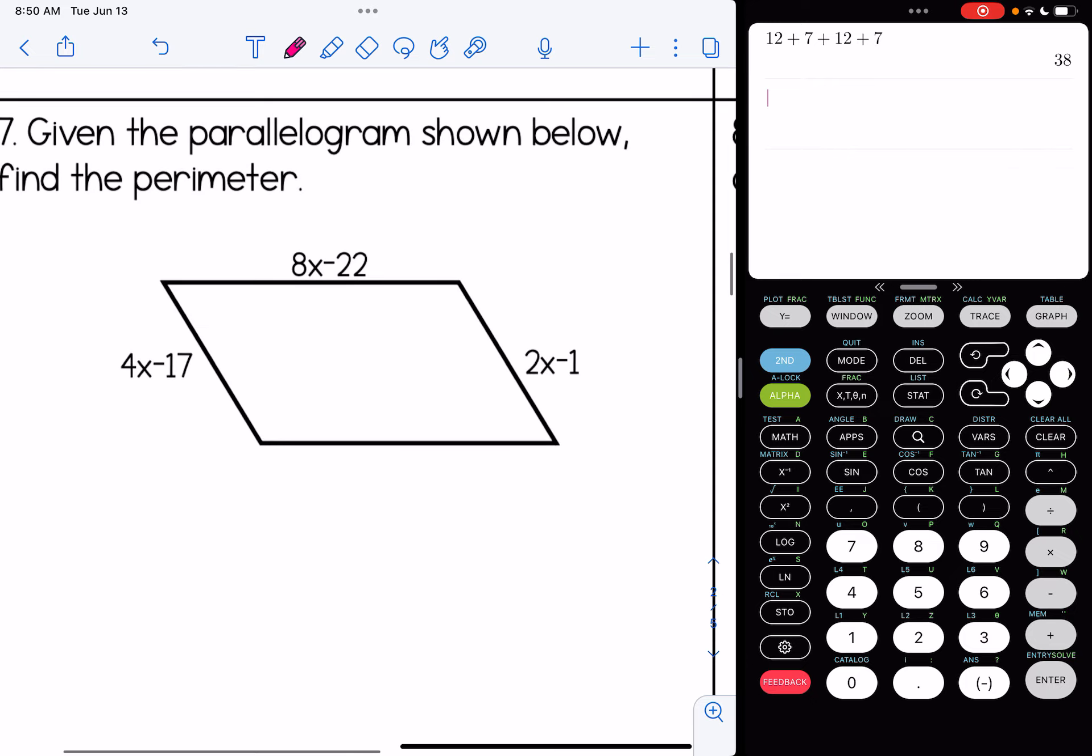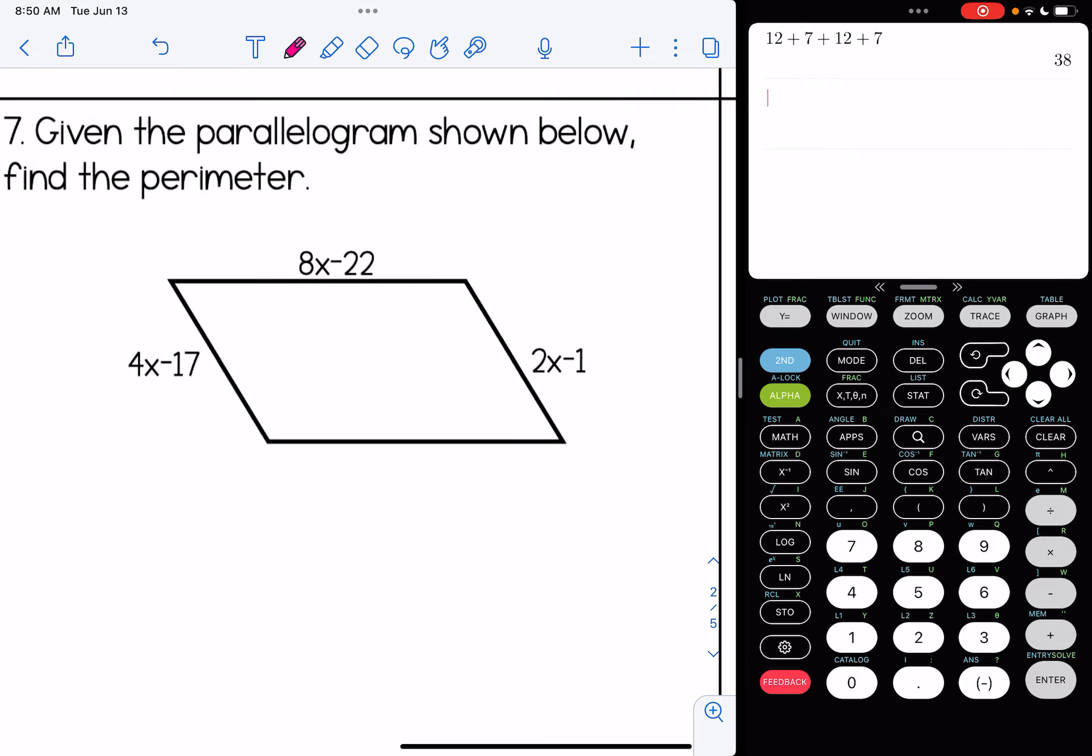Number seven, given the parallelogram shown below, find the perimeter. Well, we know that opposite sides are congruent, so I know that 4X minus 17 and 2X minus 1 are going to be equal to one another. So I'm going to get the variables together on one side, and I'm going to get the numbers together on one side. Basically the constants together. I get 2X is 16 and X is 8.